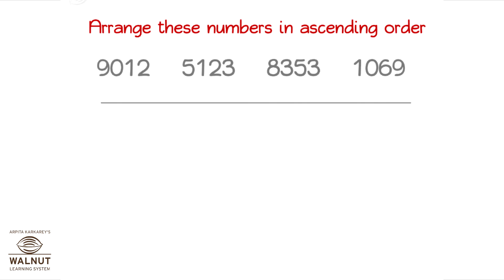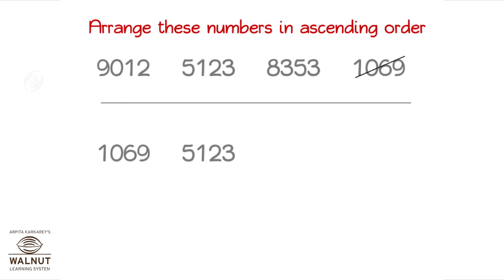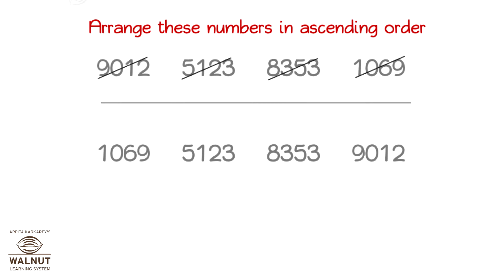Arrange these numbers in ascending order. You pick the smallest number and place it first, then the next smallest, then the next smallest, then write the last one. So, we get the numbers in ascending order.